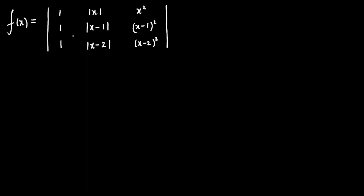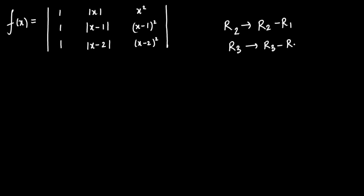A determinant is given. Before I open this, I am going to create as many zeros as I can using row transformation or column transformation. Right now, I am comfortable with row transformation. So, row 2 goes to row 2 minus row 1, and row 3 goes to row 3 minus row 1.